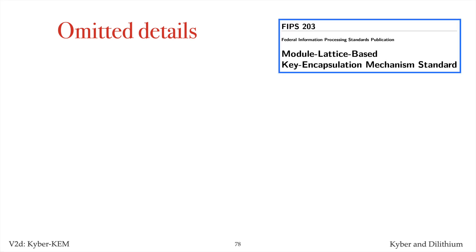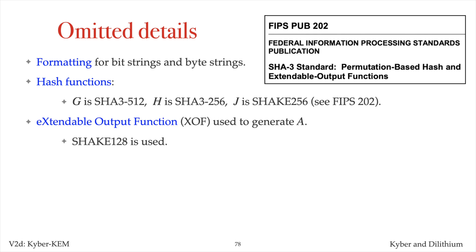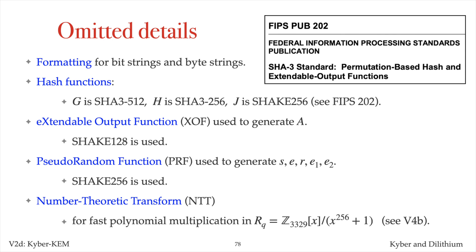Some Kyber details were omitted and can be found in the FIPS 203 document. FIPS 203 prescribes the formatting of bit strings and byte strings. SHAKE is an extendable output hash function specified in FIPS 202. The hash functions g, h, and j are defined from SHA-3 and SHA-256. SHAKE-128 is used to define an extendable output function that generates the matrix A from the secret seed row. SHAKE-256 is used to define a pseudo-random function that generates the coefficients of polynomials in S, E, R, E1, and E2. The number theoretic transform is used for fast polynomial multiplication in RQ, and the Kyber KEM entity will be described in V4B.